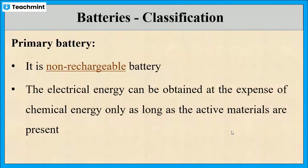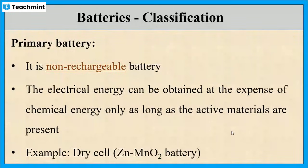After complete dissolution of the entire zinc, the Daniel cell will stop working. In the same way, primary batteries also work. Once the active materials have been consumed, they have to be discarded. The most common example of a primary battery is the zinc-manganese dioxide battery, also known as a dry cell.